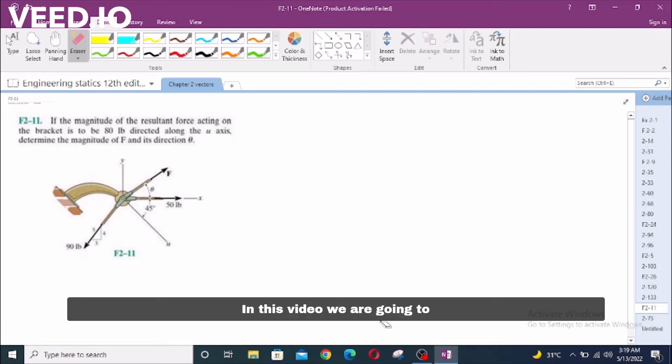In this video, we are going to solve fundamental problem F2-11 from RC Hibbeler Engineering Statics 12th edition. The problem says, if the magnitude of the resultant force acting on the bracket is to be 80 lb directed along the U-axis, determine the magnitude of F and its direction theta.